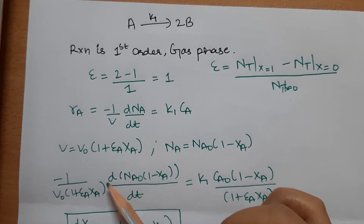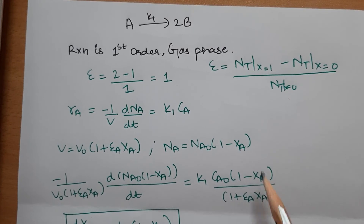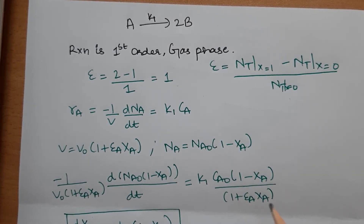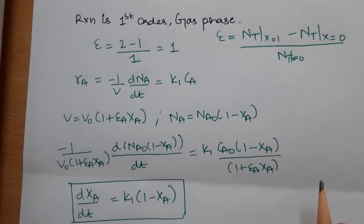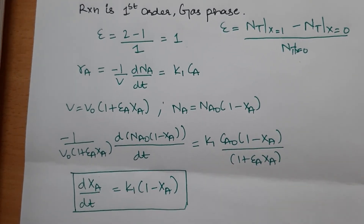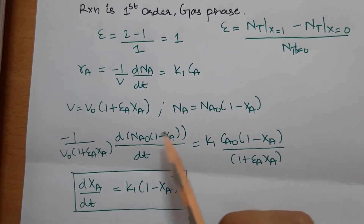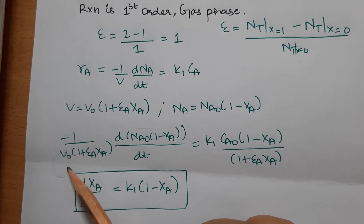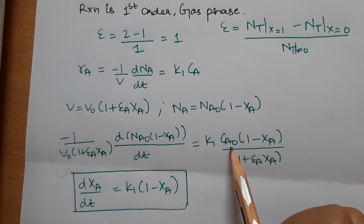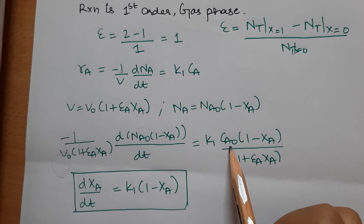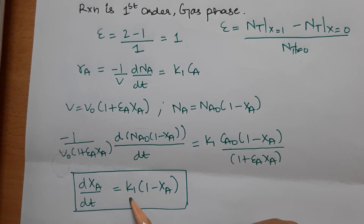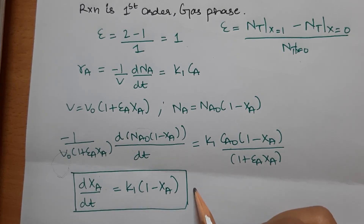Using the first-order rate equation −(1/V)(dNA/dt) = K₁CA, with NA = NA0(1−XA), V = V0(1+εA·XA), and CA = CA0(1−XA)/(1+εA·XA), we simplify to get dXA/dt = K₁(1 − XA).